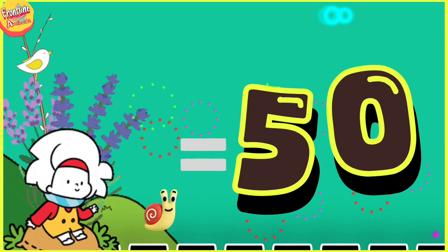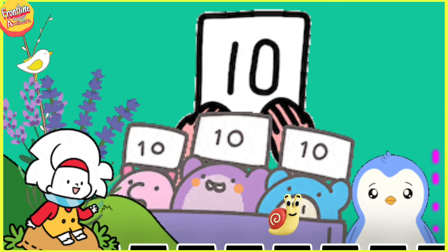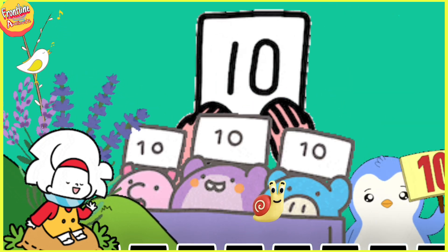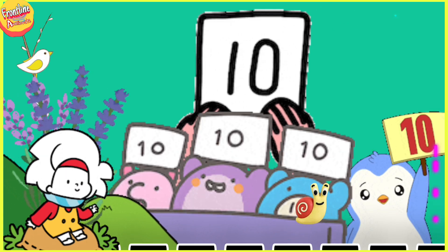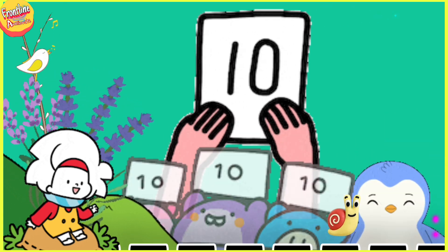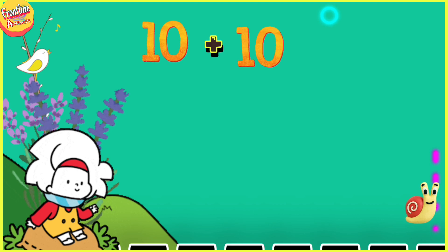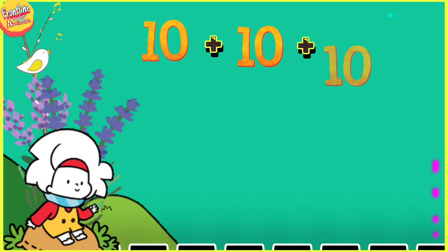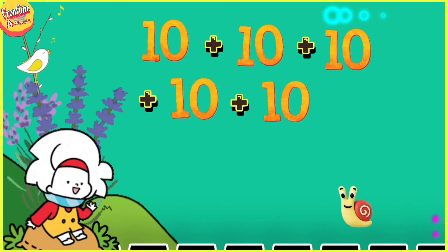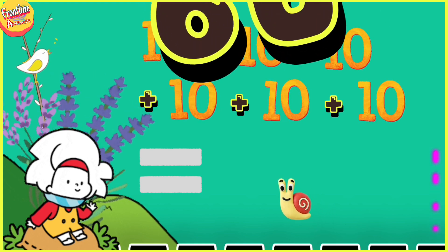Now you get it — how 10 makes different numbers! So friends, let's keep going. Now we add 10 six times: 10 plus 10 plus 10 plus 10 plus 10 plus 10 — it will make 60!